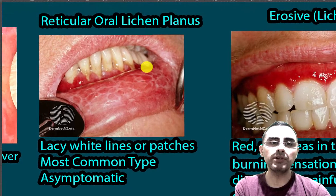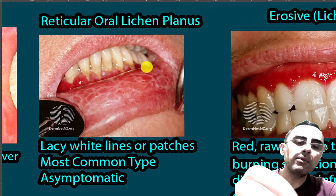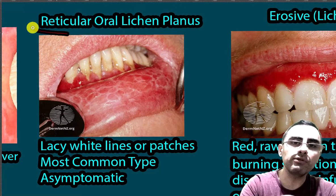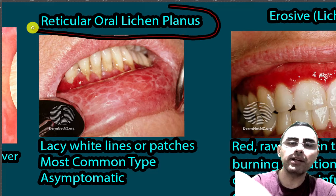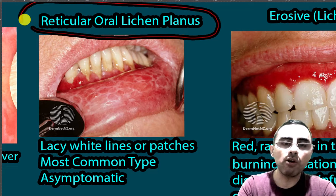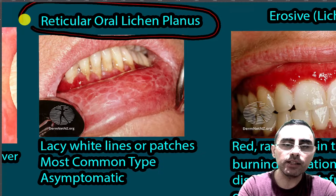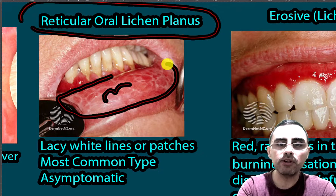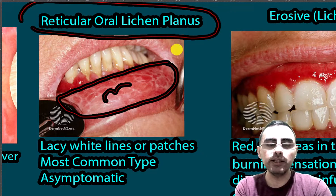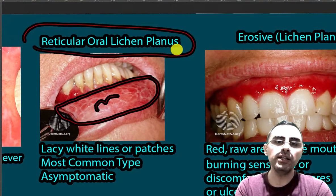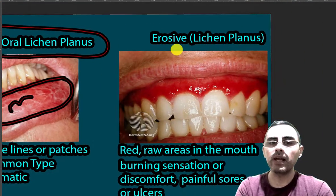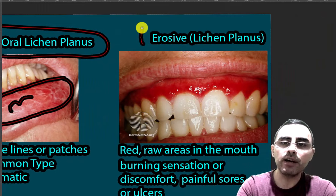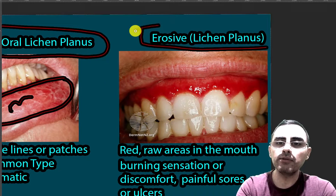The most common form is reticular oral lichen planus. You can see the lacy white lines and patches — this is the most common appearance and characteristic. This type is usually asymptomatic and generally has a good prognosis.